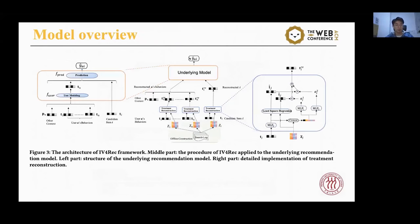Here is an overview of our model. The left part denotes the structure of the underlying model. Underlying models utilize users' historical behaviors to learn user representations through a user modeling component and predict the preference score of user-item pairs based on their learned representations through a prediction model. The right part denotes the detailed implementation of treatment reconstruction mentioned before. Our framework can be applied after the embedding layer of the underlying model. We leverage user search queries to enhance the embeddings in recommendation, as illustrated in the middle part of this figure.